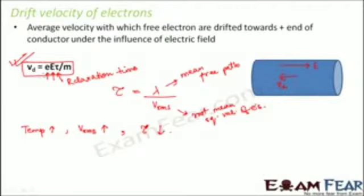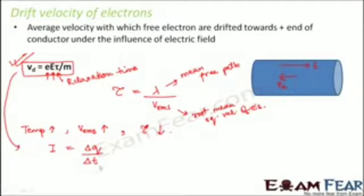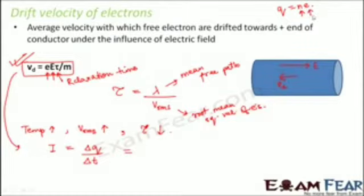The drift velocity expression in terms of relaxation time is eEτ/m. Now if we want to establish a relationship between drift velocity and current: current is charge per unit time, so average current is delta q by delta t. Charge delta q can be written as ne, where n is the number of charge carriers and e is the charge on an electron. For 10 electrons, 10 multiplied by the charge on one electron gives the total charge — since charge on one electron is 1.6 × 10⁻¹⁹ coulombs.